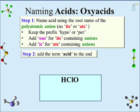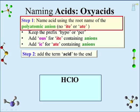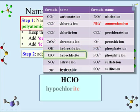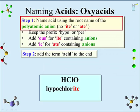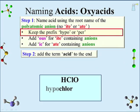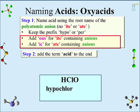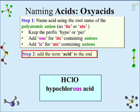One last example: HClO. The polyatomic ion is ClO⁻, which is hypochlorite. Remove the '-ite' — but keep the 'hypo-' prefix because chlorine is bound to the least number of oxygens (one). Since '-ite' was removed, add '-ous.' Tag on 'acid.' HClO is hypochlorous acid.